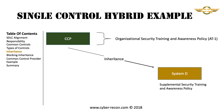In some cases, the Common Control being provided for inheritance doesn't meet the security requirements of the Information System. In these cases, the Information System Owner can reinforce the control or add supplemental security, making the control hybrid — partially implemented by the Common Control Provider and partially implemented by the Information System Owner.